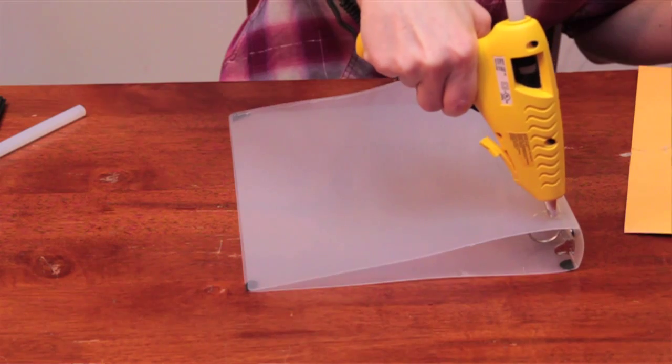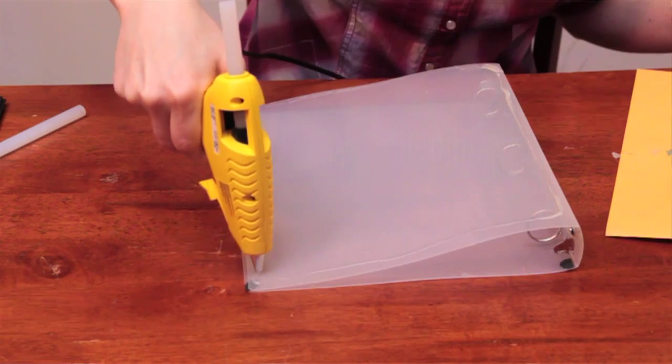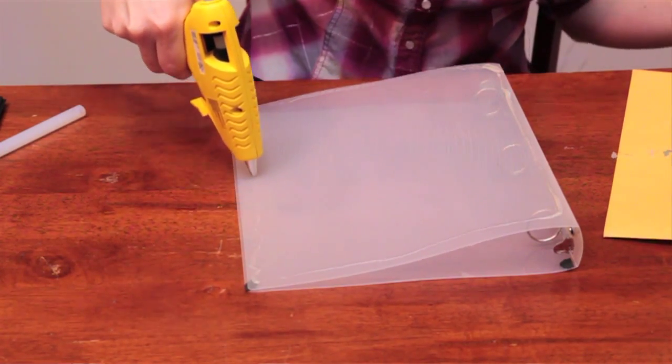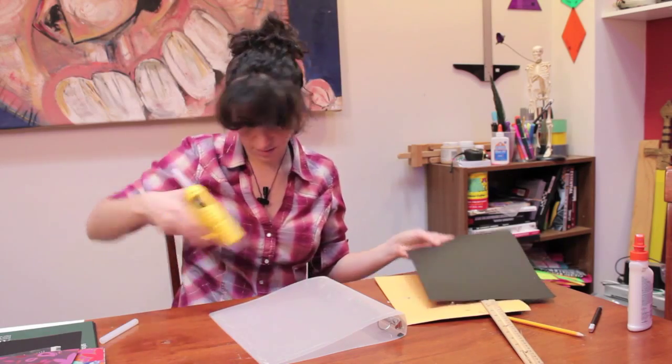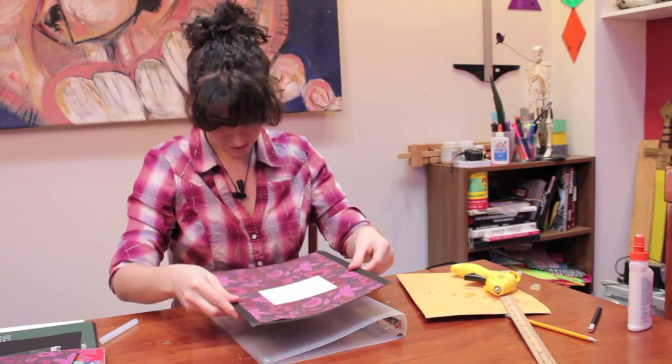Just run a thin stream of hot glue all along this binder. And it should be a little cooler by the time it's time for us to line it up and press.